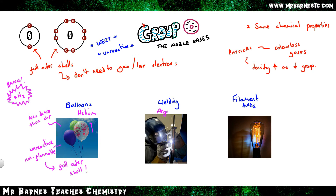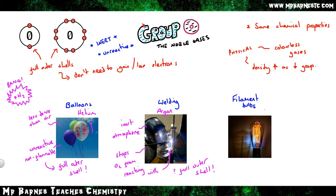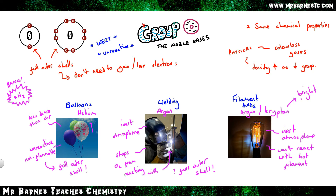Argon is used in welding because it is inert and provides an inert atmosphere, preventing oxygen from reacting with the metal and causing impurities. Argon or krypton can be used in filament light bulbs, again because they provide an inert atmosphere and won't react with, corrode, or break the hot filament. Krypton is also used in bright lights and flash photography for exactly the same reason.